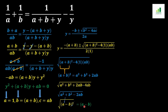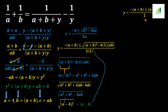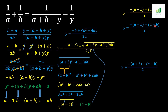We insert (a-b) in place of the root value and get: y = (-(a+b) ± (a-b)) / 2. The first value is y = (-(a+b) + (a-b)) / 2, and the second value is y = (-(a+b) - (a-b)) / 2.